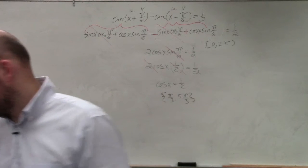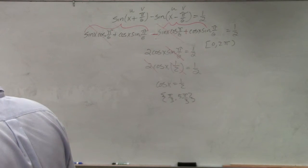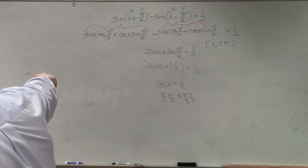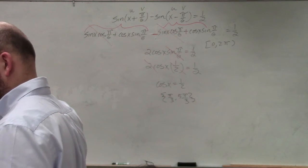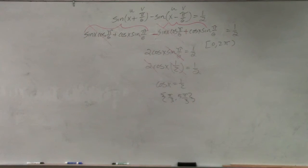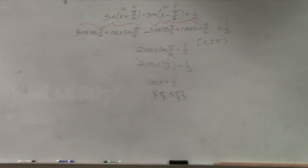Why'd you get rid of sine pi over 6 cosine of x? Well, because sine of pi over 6, what does that equal to? 1 half. Sine of pi over 6, see, that is 1 half. So I didn't get rid of it, I just evaluated it.